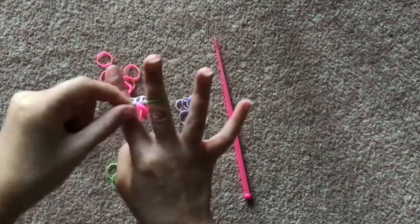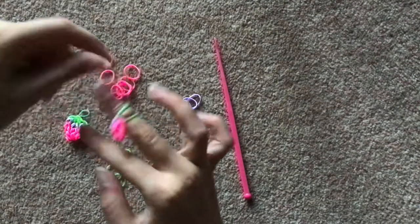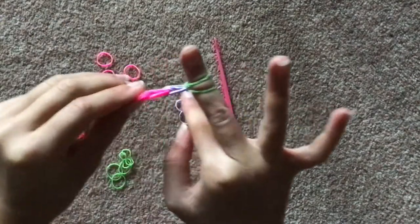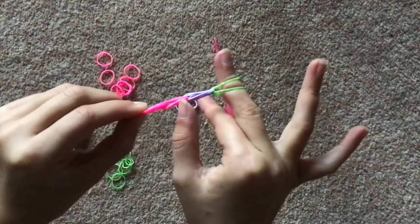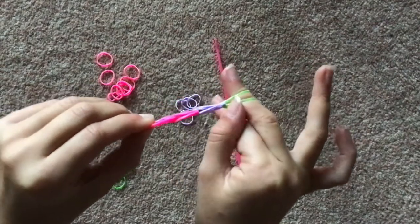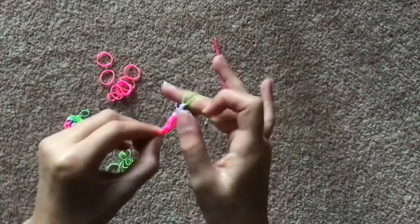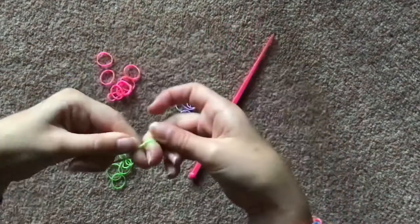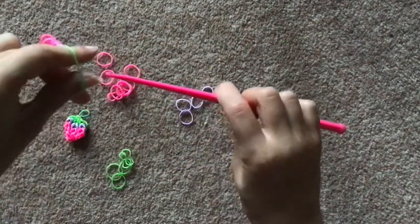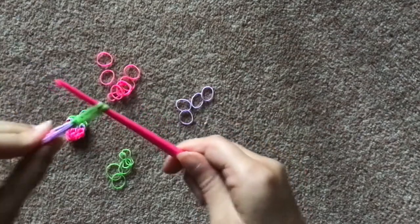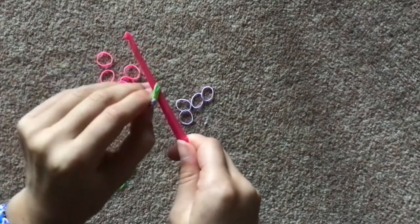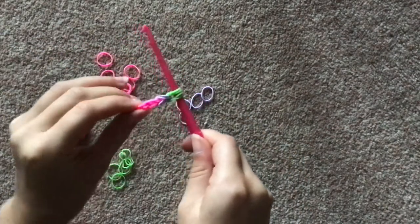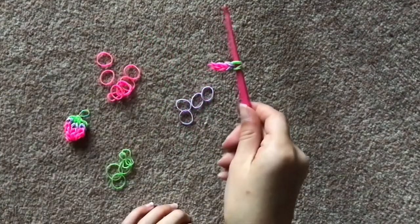Then you're going to get this green and just loop it over onto your finger like that. So now you should have one dark pink, another dark pink, a lilac and a light green, so in total that's four. Then just take this green off and put it onto your hook and once that's done just move it down a bit and then you're going to do the exact same thing again.